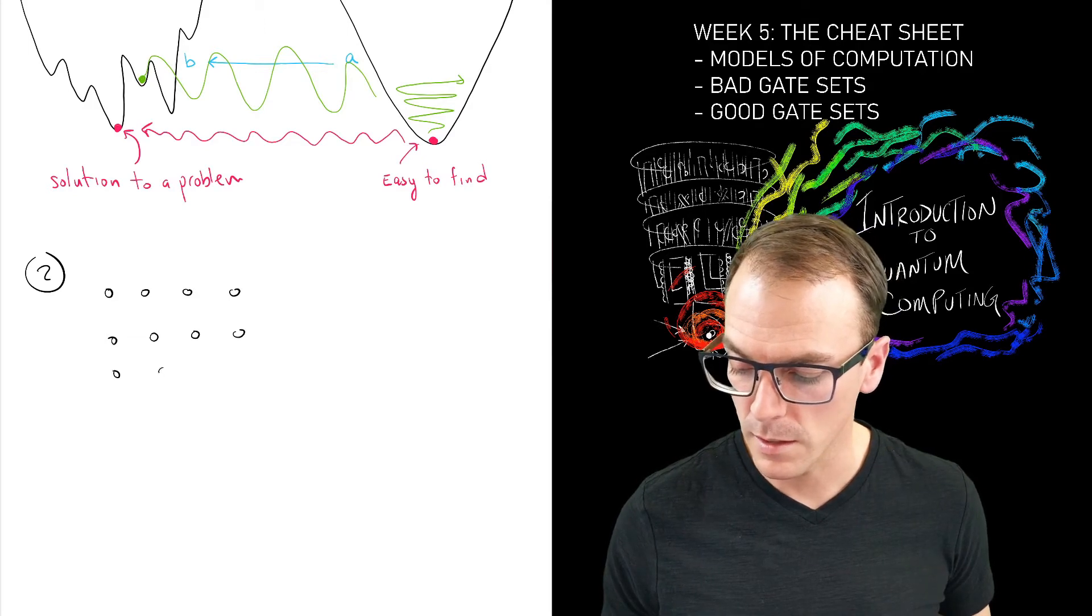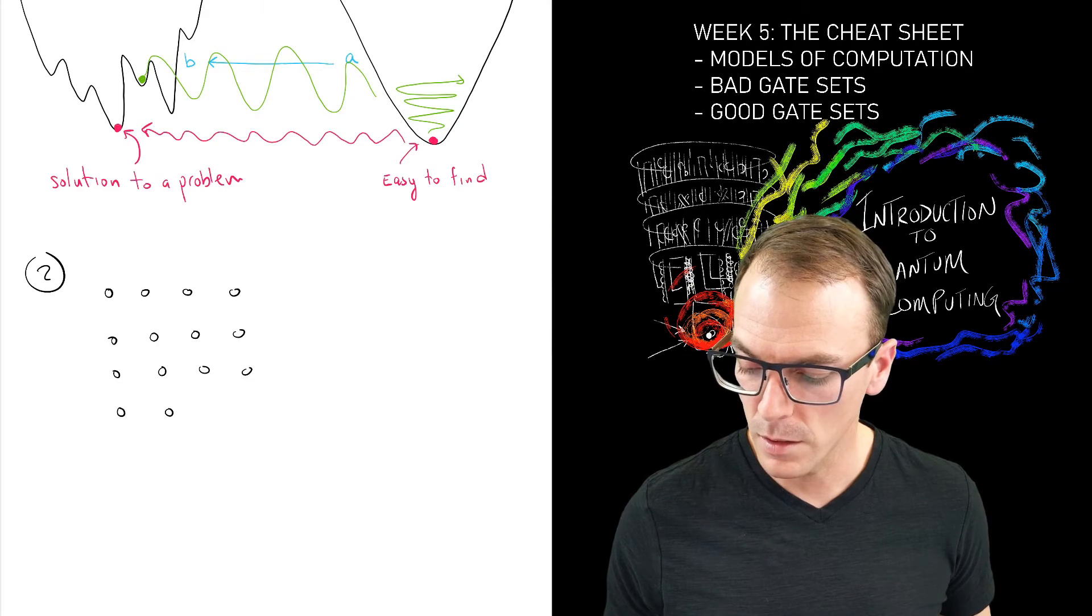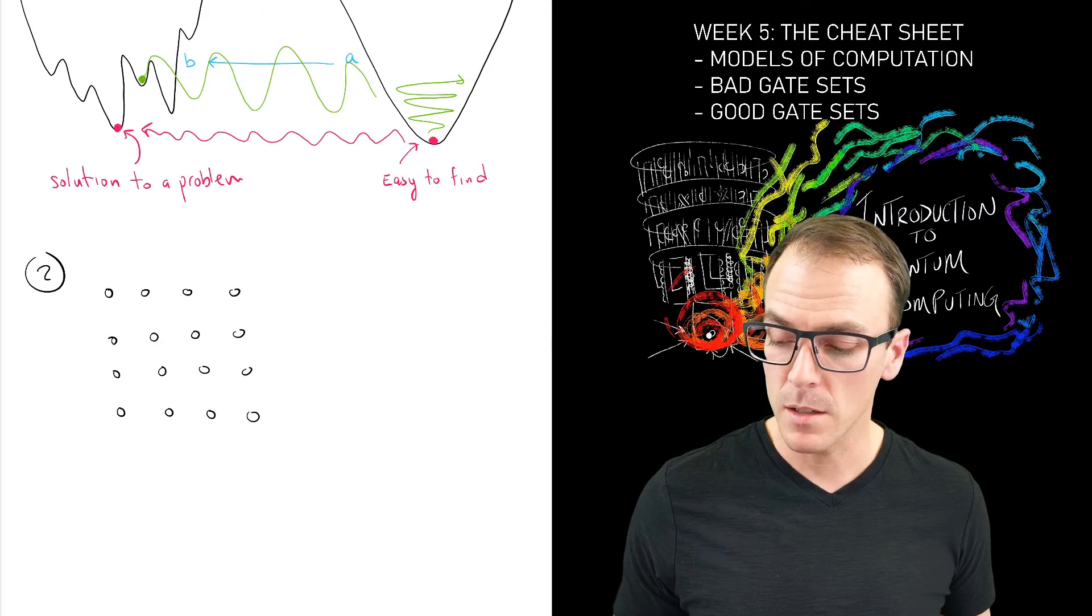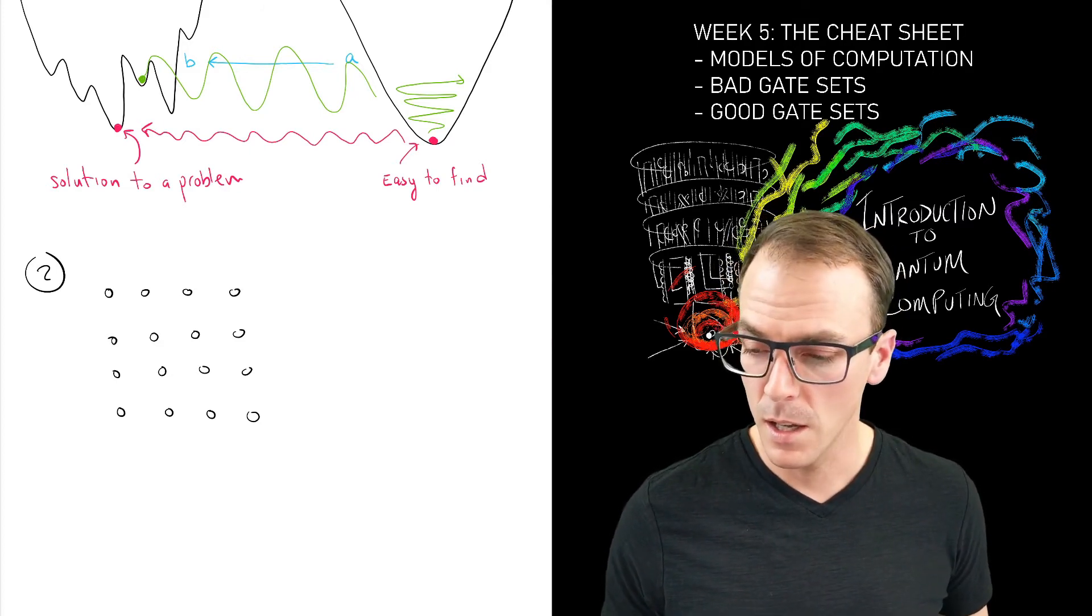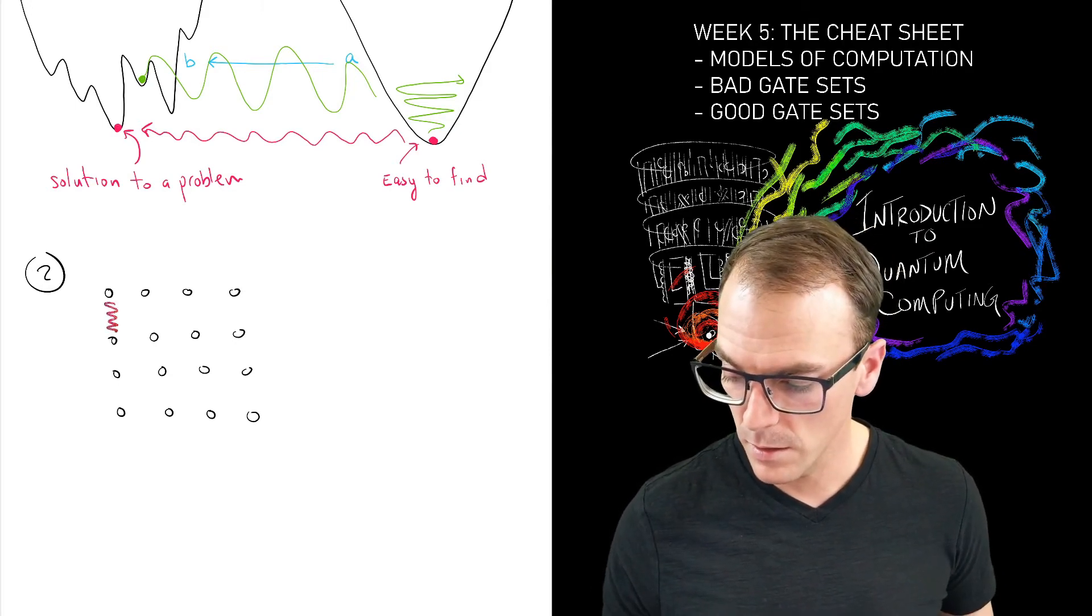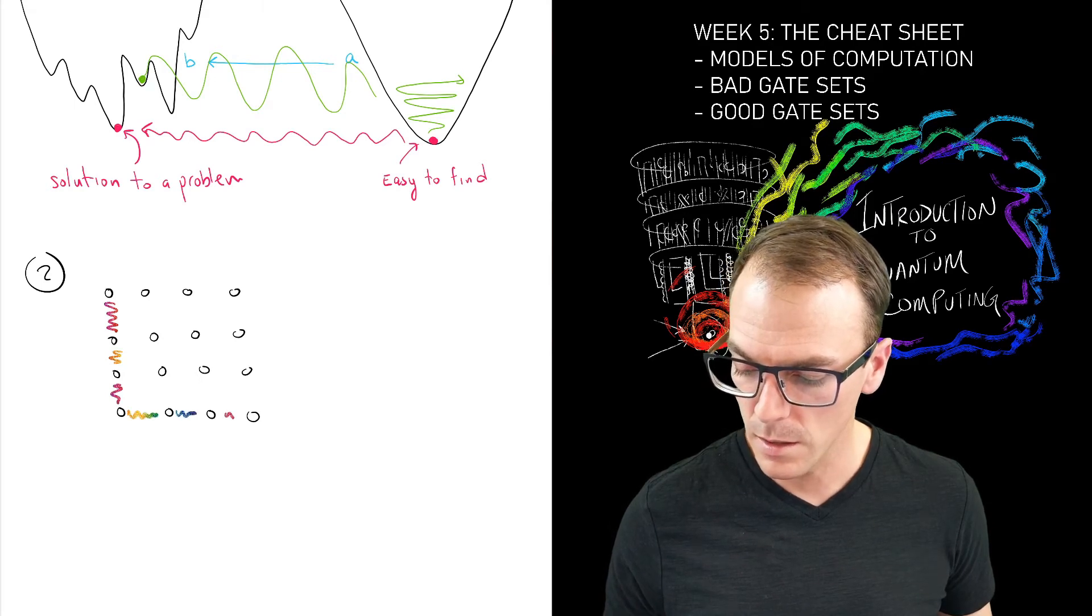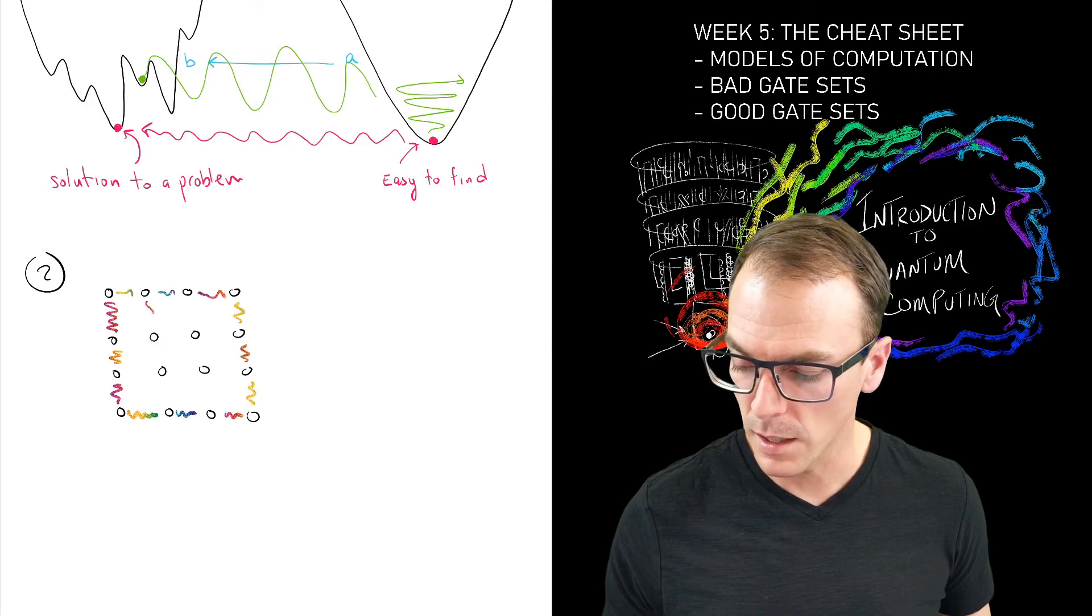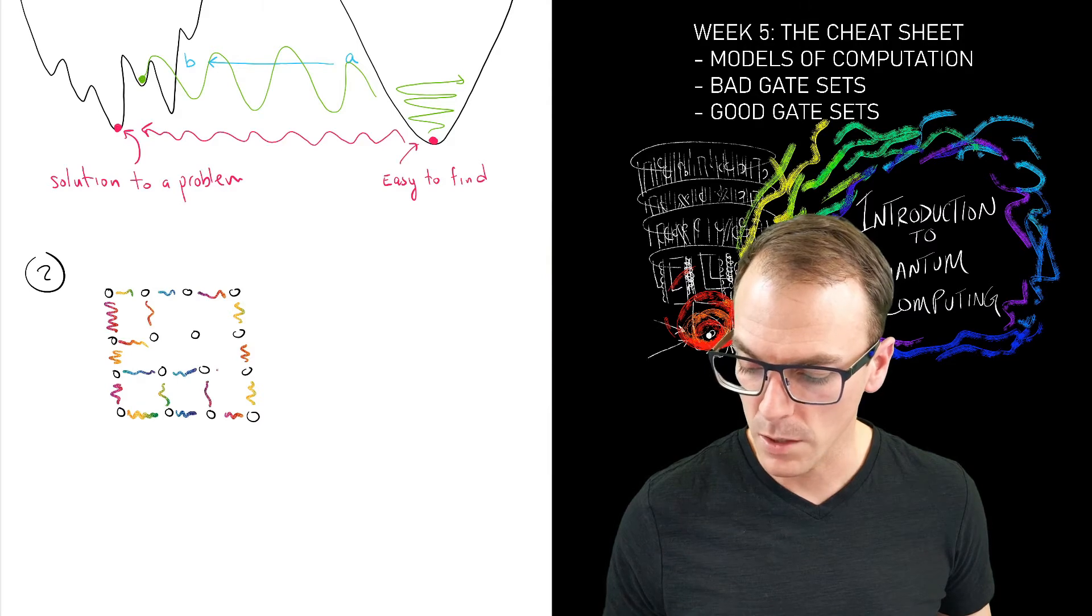But imagine we have a whole bunch of qubits, and rather than starting in this canonical zero computational basis state, they start in a state that is highly entangled. So all of the qubits are in a large entangled state. Here's my picture of entanglement, colorful, magical, mystical.